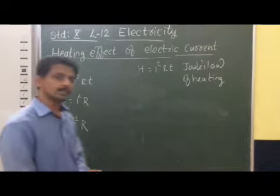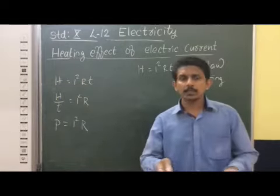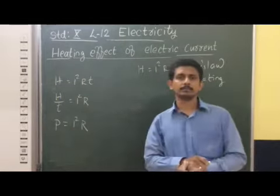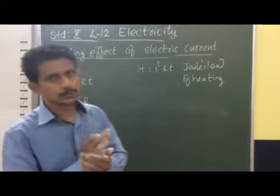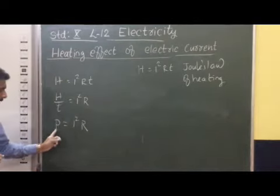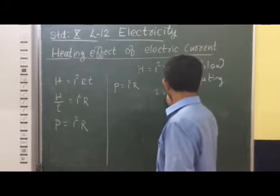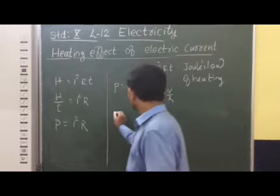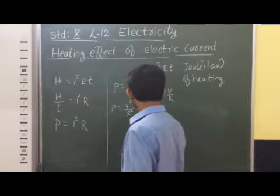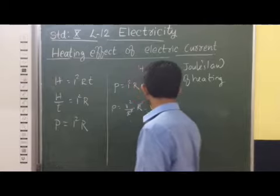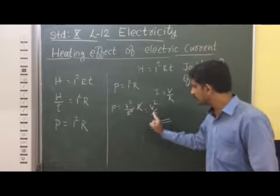So electric power is the rate at which heat energy is consumed. P is equal to I²R. Now if we substitute I equal to V divided by R into this formula, we get P equal to V² divided by R² into R, which simplifies to P equal to V² divided by R. So that is another form of the power equation.